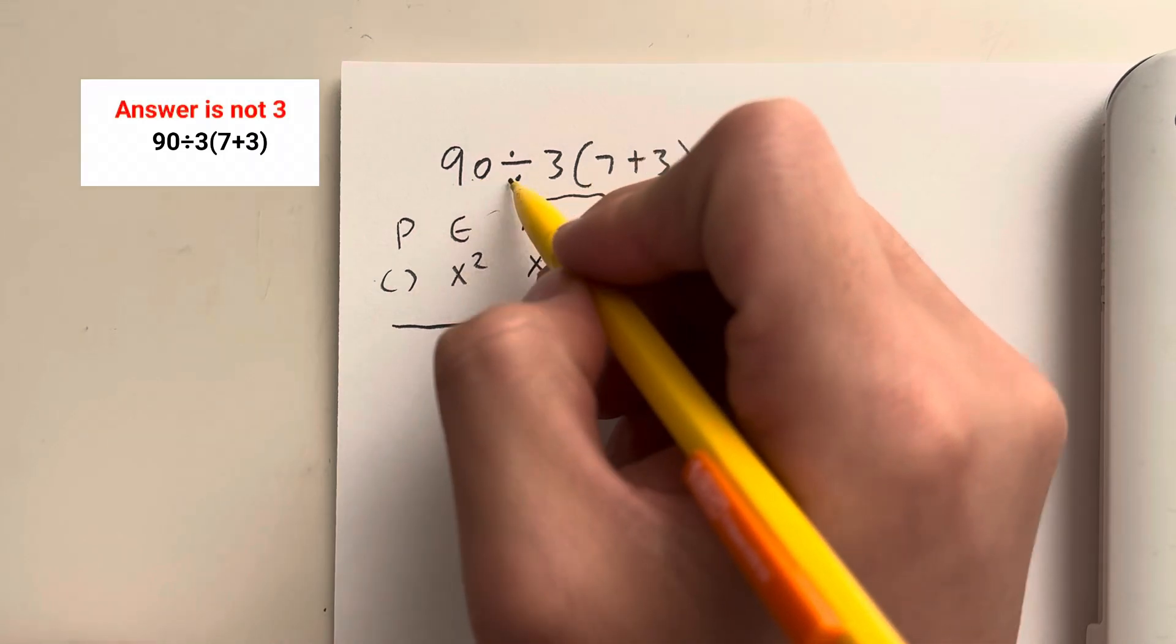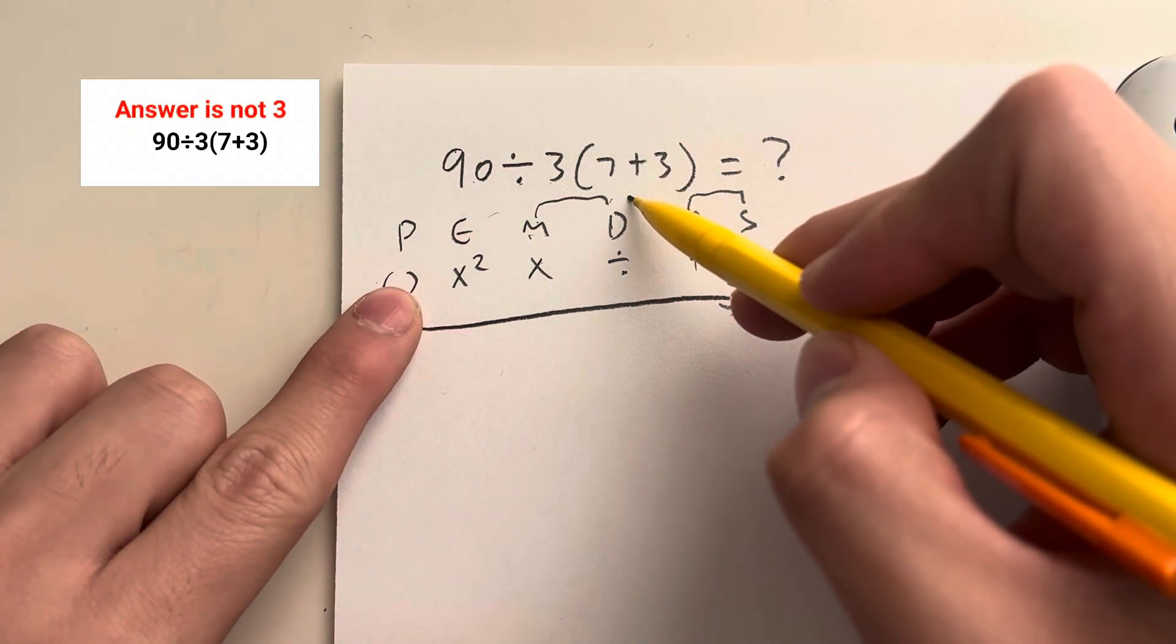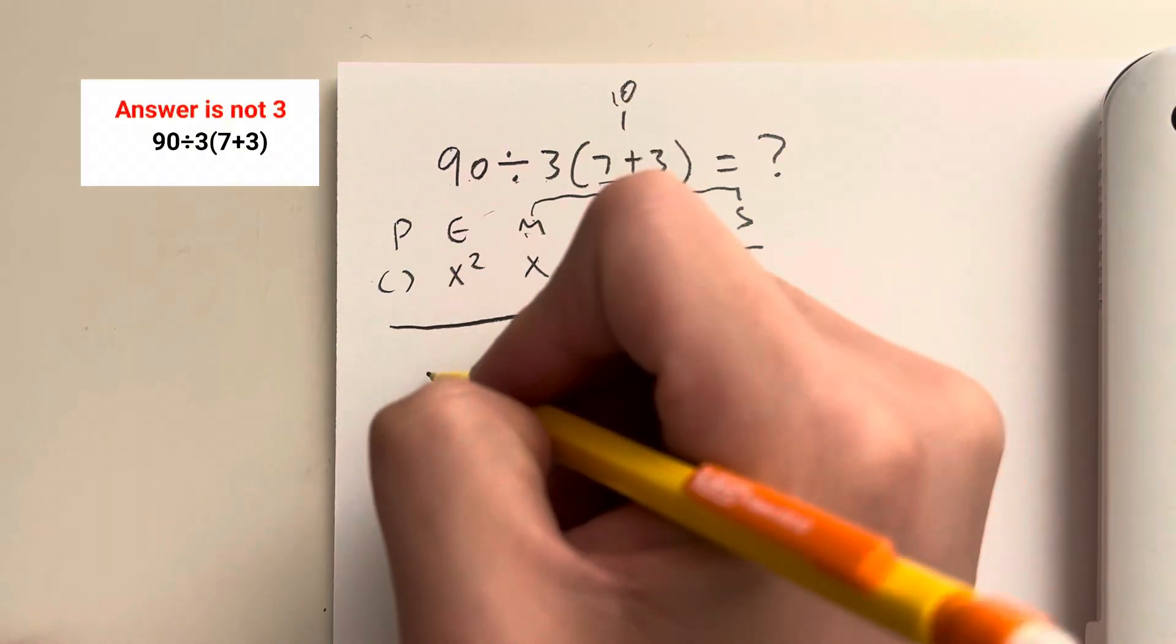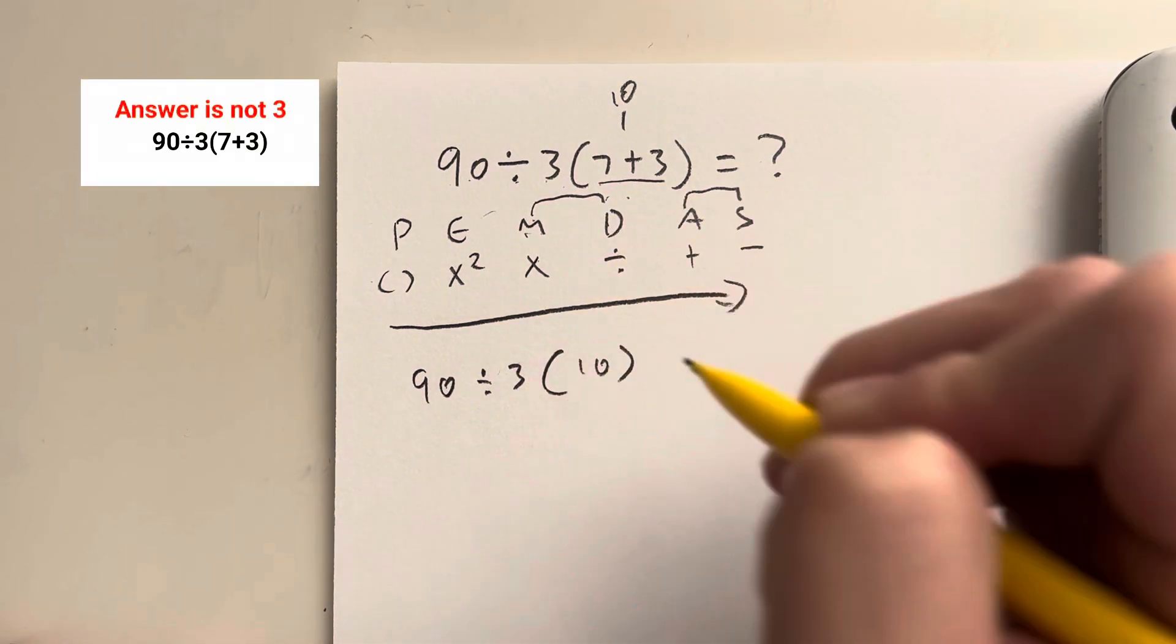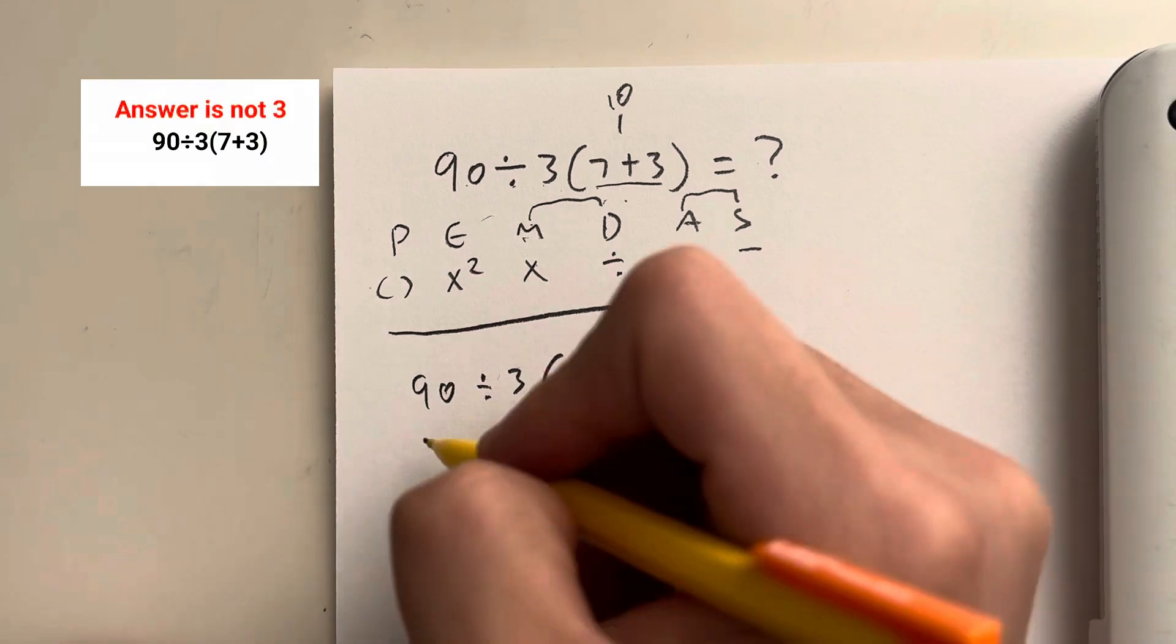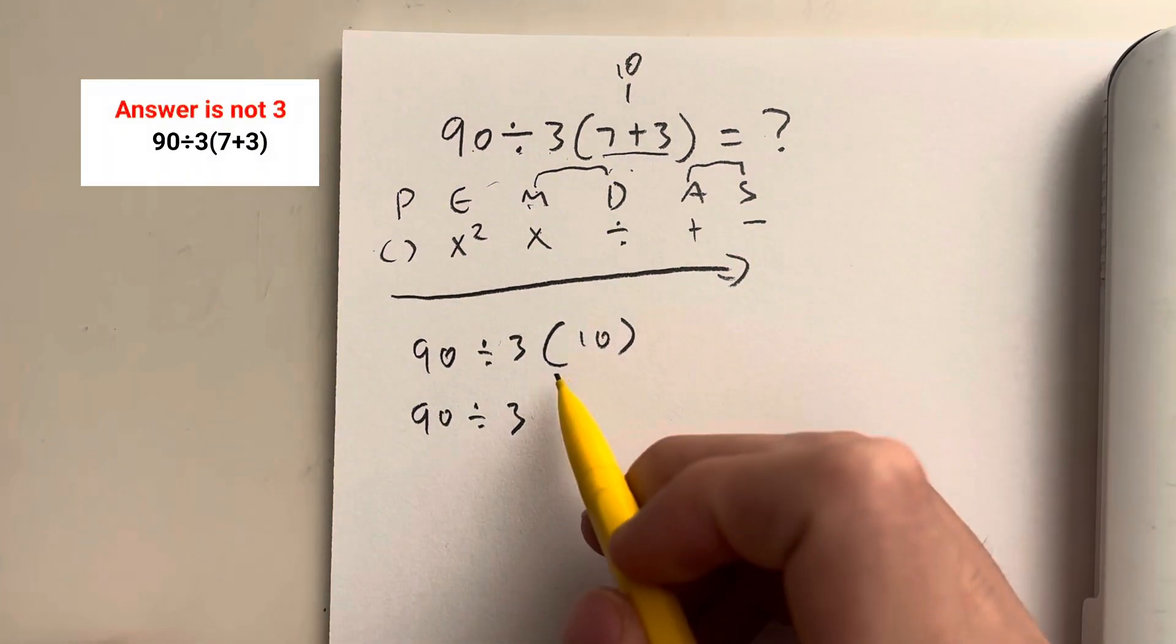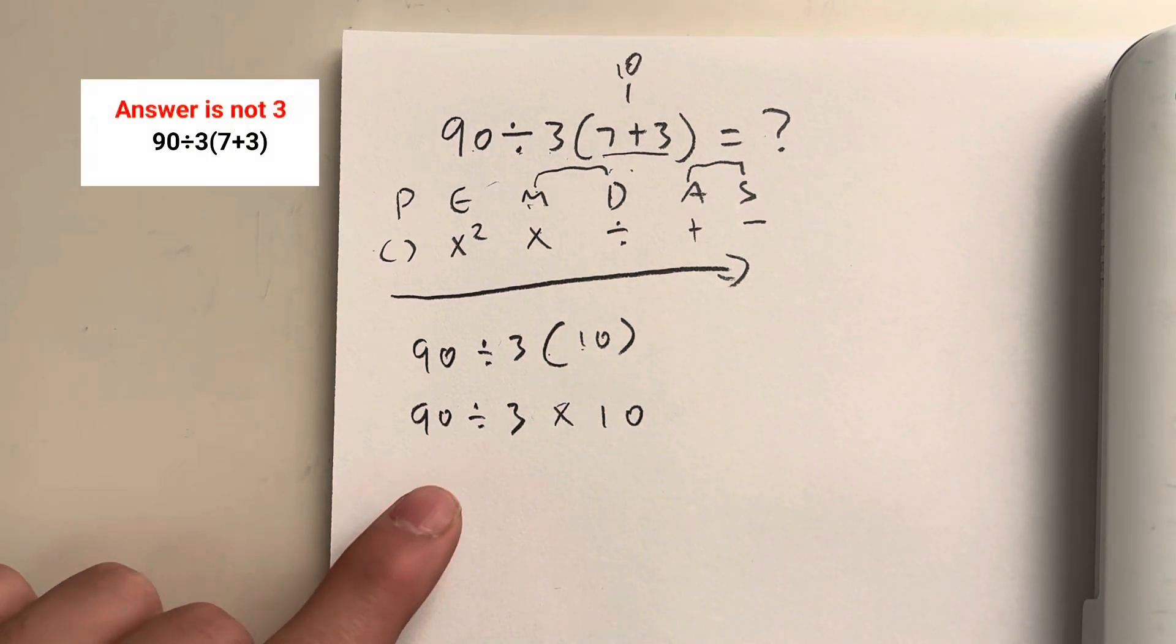So we have 90 divided by 3 times 7 plus 3. What do we see first? I see the parentheses first, so we have to do 7 plus 3 first, and that's just equal to 10. So I'm going to rewrite this as 90 divided by 3, parentheses, 10. And then I'm going to rewrite this again because this becomes 90 divided by 3. And then because I have the parentheses, this is the same as just times 10.